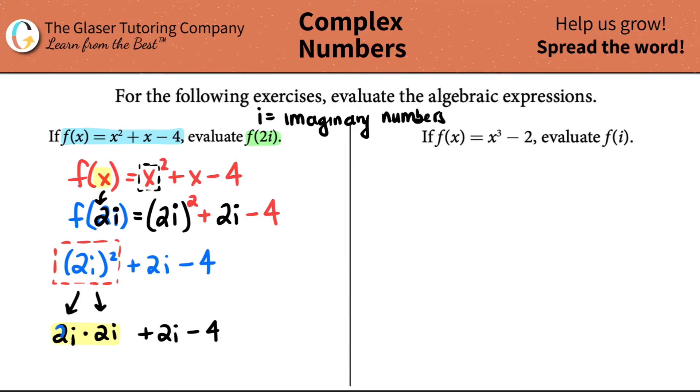So that's what this is, plus 2i minus 4. So what is 2i times 2i? Well, 2 times 2 is 4. And now how many i's do we have? Well, we have 1 here and we have 1 here. So that's i squared. So it would be 4i squared. And then we just continue on. So plus 2i. There should be a squared here. Good catch. And then minus 4.